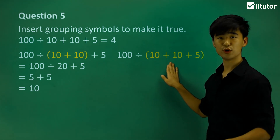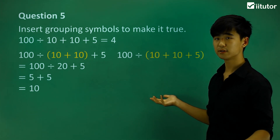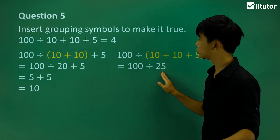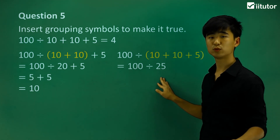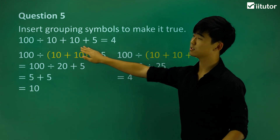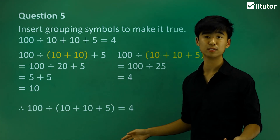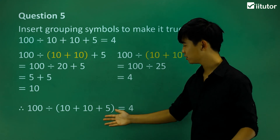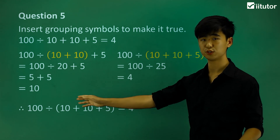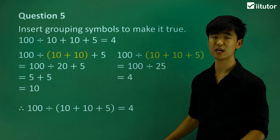Now let's consider the next case with these brackets. We have 10 plus 10 plus 5, which gives me 25. So now 100 divided by 25 gives me 4 — and that's the one we want. So to make this statement true, we insert grouping symbols between the last three numbers — 10 plus 10 plus 5 — and we don't include the grouping symbols for the division of our 100. If we place our grouping symbols there, that's how we make this statement true.